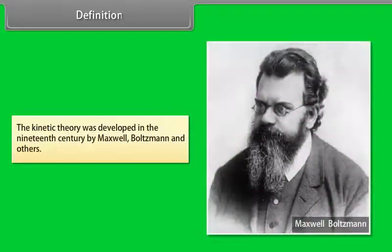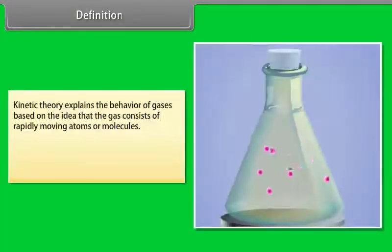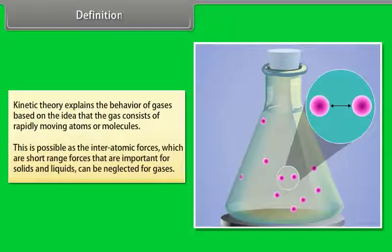Definition: The kinetic theory was developed in the 19th century by Maxwell, Boltzmann and others. Kinetic theory explains the behavior of gases based on the idea that the gas consists of rapidly moving atoms and molecules. This is possible as the interatomic forces which are short-range forces that are important for solids and liquids can be neglected for gases.